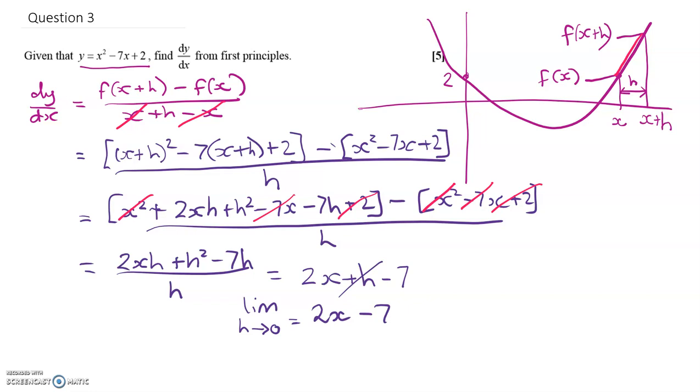And what you can do, just to check whether you're right or not, is just do the traditional differentiation rule for the function. So if y is x squared minus 7x plus 2, let's differentiate it. Bring down the power, the power becomes 1 less. Here, your x will become x to the 0, and then that's just 1. And the constant term disappears. So yeah, it looks like that's correct.